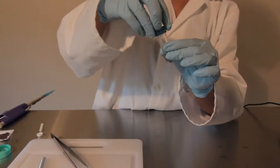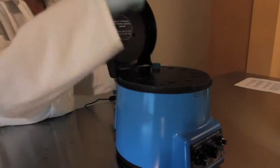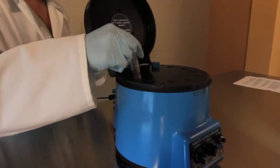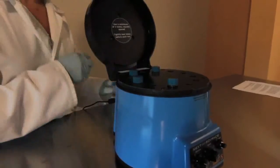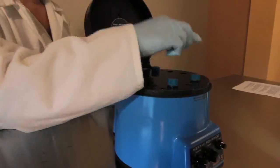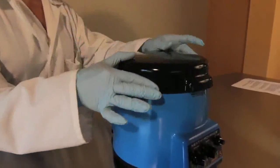This is very important. Make sure that your caps are closed very tightly before homogenization. Place them evenly spaced inside of the Bullet Blender. I have six samples loaded. I'm going to set the speed to 8 and the time to 3 minutes. Close the lid and press start.